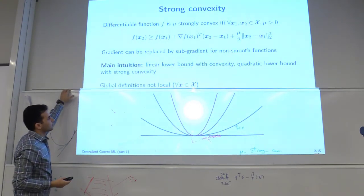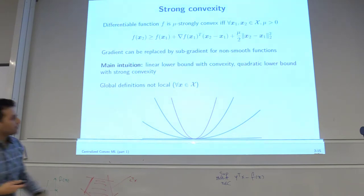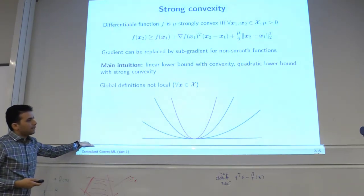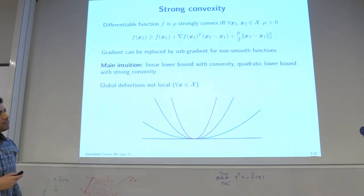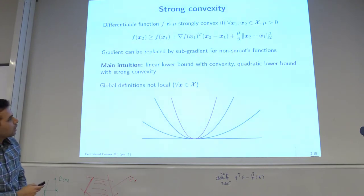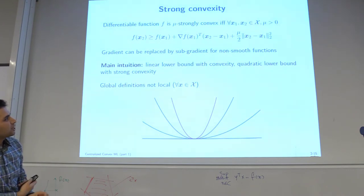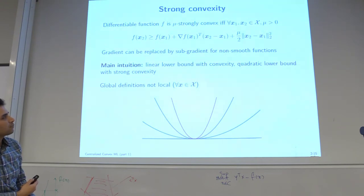Main intuition: linear lower bound from convexity, quadratic lower bound from strong convexity. This is a global definition — it should hold for all x in the domain — but you can define local strong convexity as well, as you will see in Newton methods. Don't worry about subgradients — they appear in optional slides and are just a generalization of the gradient for non-differentiable functions.